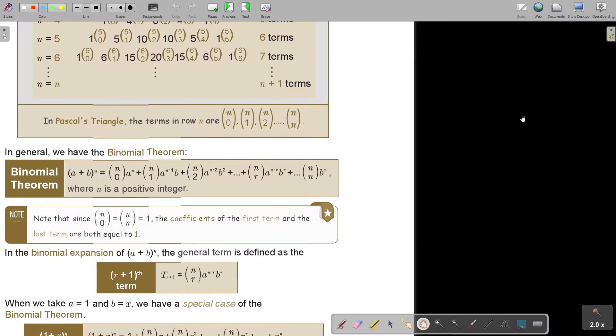In general, we have the binomial theorem. So if this, then I start with 0. Then it's 1, 2, 3, up to N. The first term is to the power N, and then N minus 1, N minus 2. The second term is going to be 0.